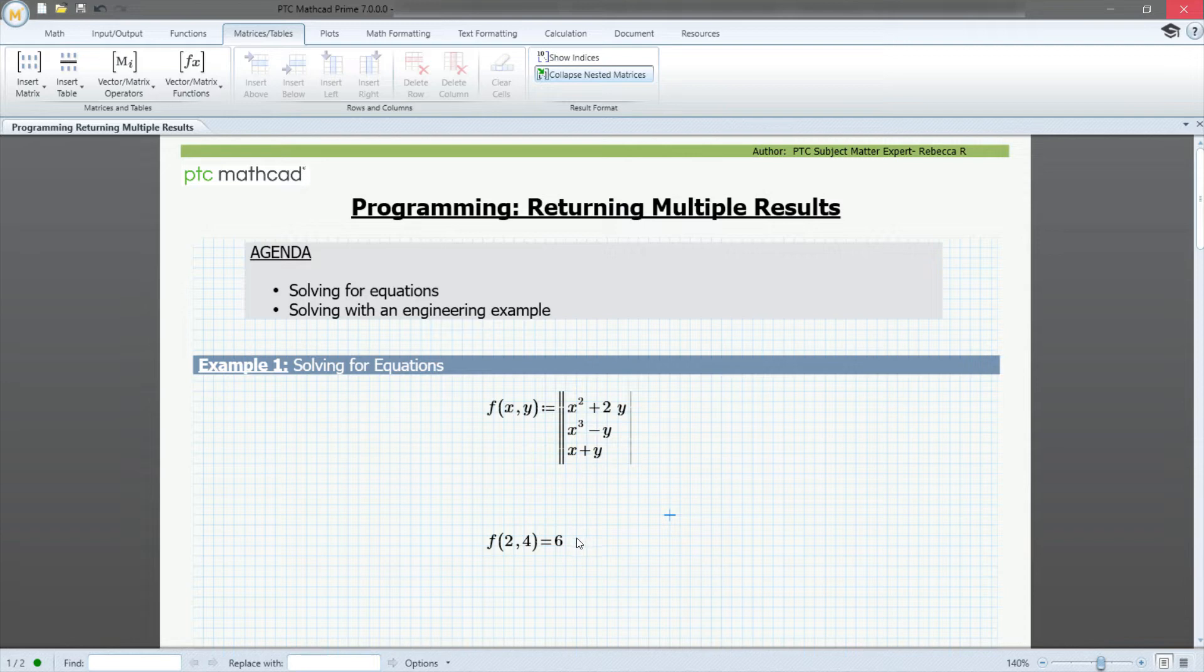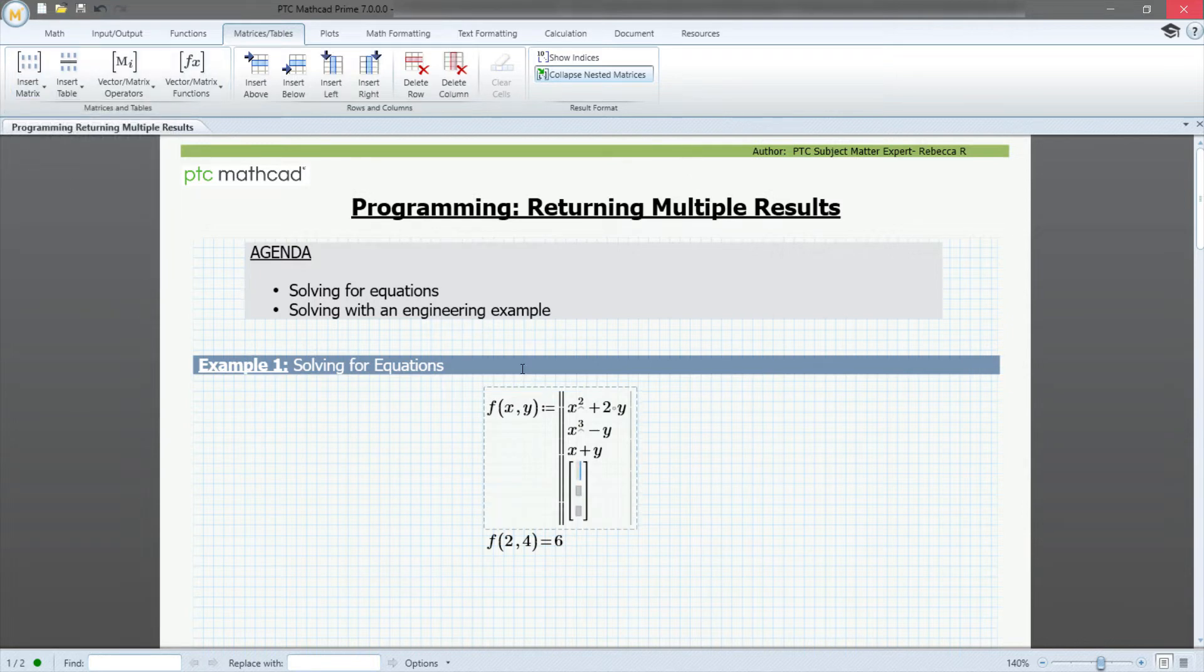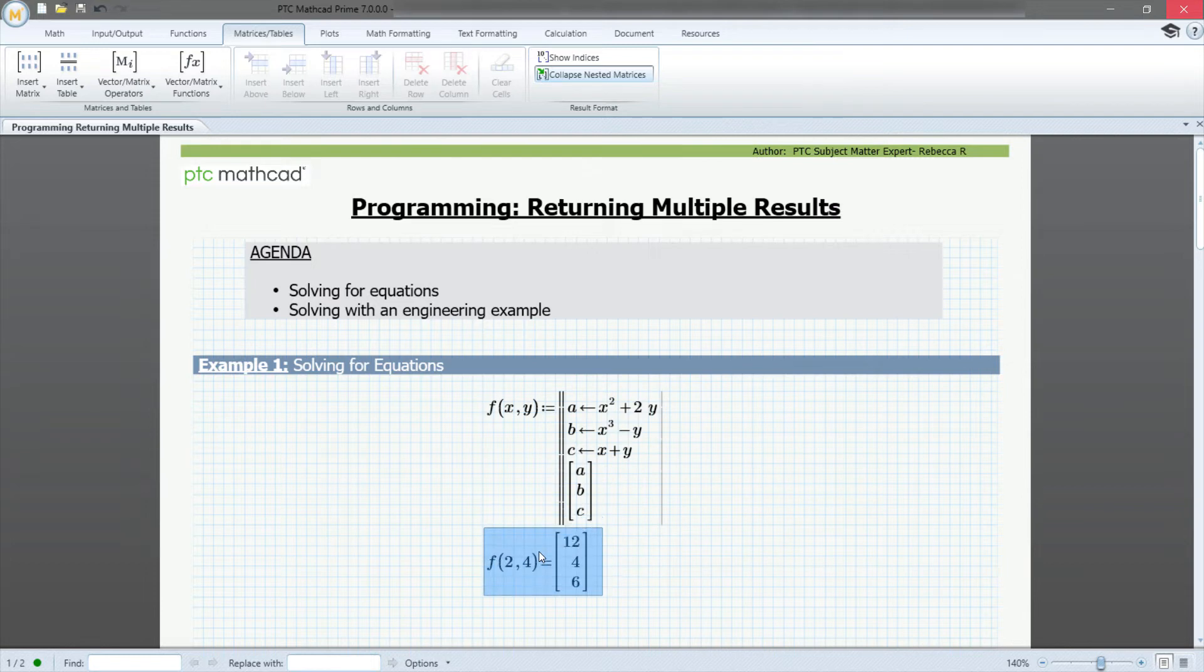If we wanted all three of the equations to be solved and shown, all you have to do is add a matrix at the bottom of the structure. This can be a 3 by 1 or a 1 by 3. We'll define three new variables, a, b, and c, and insert the local assignment. Now, as you can see, all three values have been solved for.